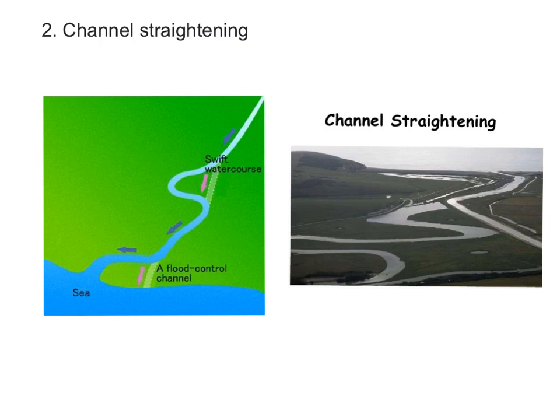The second method of hard engineering to control river flooding is to straighten the channel. When a river flows in a meandering pattern, the river water flows down and it can cause flooding in and around the meandering area. A simple solution is to cut off the meander and create a brand new straight channel, increasing the flow and efficiency of the water so it doesn't overflow.